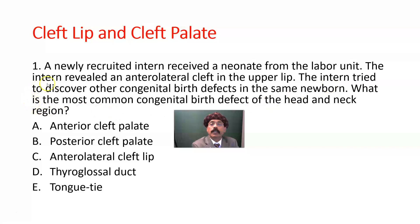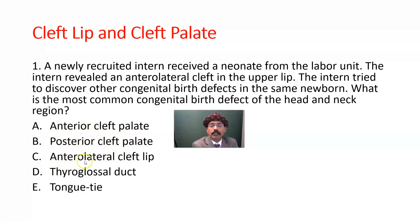Question one: A newly recruited intern received a newborn from the labor unit. The intern revealed an anterolateral cleft in the upper lip and tried to discover other congenital defects in the same newborn. What is the most common congenital defect of the head and neck region? A) Anterior cleft palate, B) Posterior cleft palate, C) Anterolateral cleft lip, D) Thyroglossal duct, E) Tongue tie. The answer is C, anterolateral cleft lip.